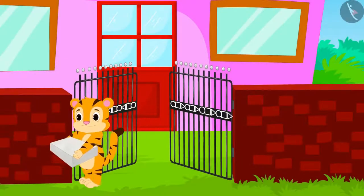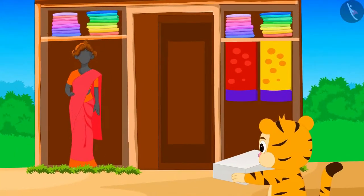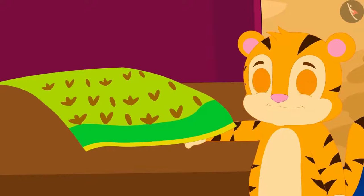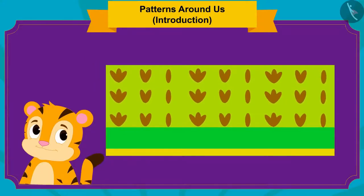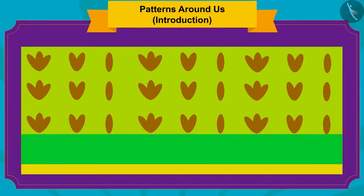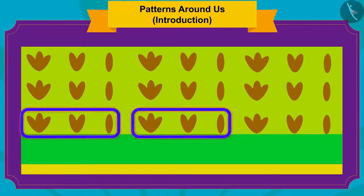Sher Khan bought the cake and has now come to buy a saree for his mother. The saree shop has beautiful sarees of various designs. Sher Khan liked a saree of a particular design very much and noticed that this saree also has a unique pattern. Children, can you find this pattern? Here, a pattern having three, two, and one leaves of the same shape is repeating, thereby forming a pattern.